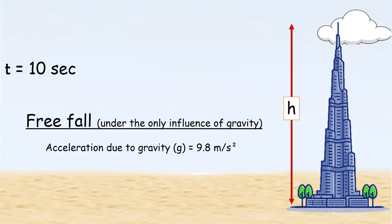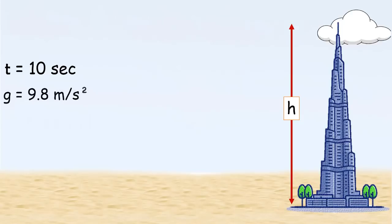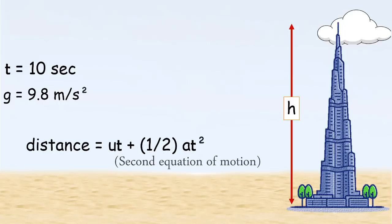Now, we are very close to the answer. We just need the right formula to place the values. And there is a standard formula for distance covered in terms of initial velocity and acceleration, popularly known as the second equation of motion.